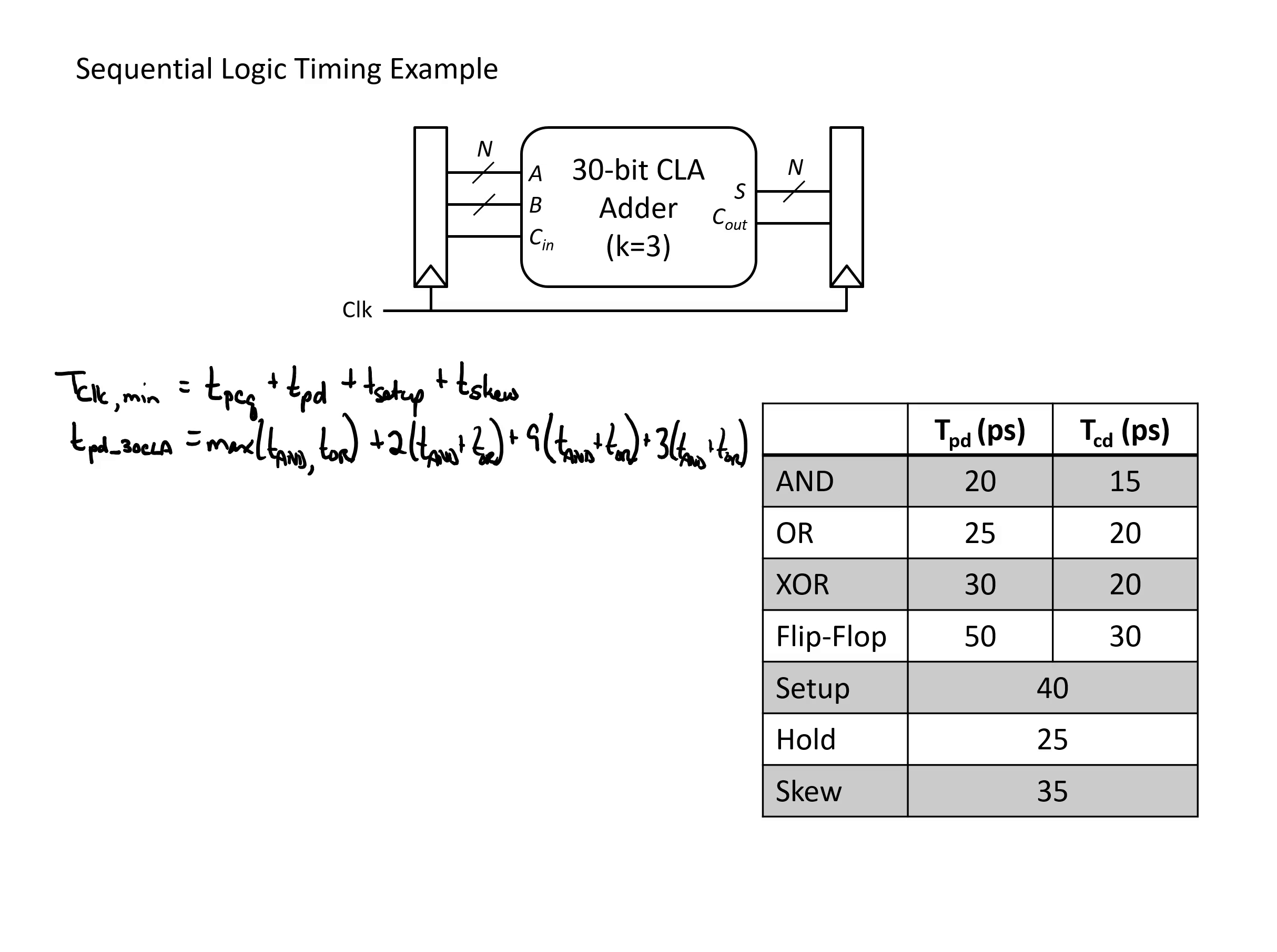From this point we can take things from the table and plug it into this equation. So we have a maximum of either 20 or 25, so that is 25 for the max here from the OR gate, and then we have a total of 14 AND and OR gates.